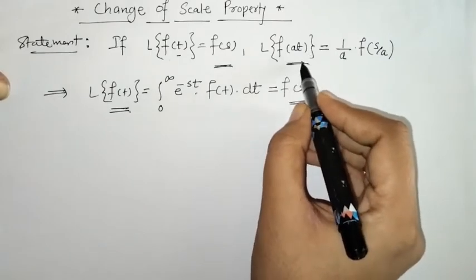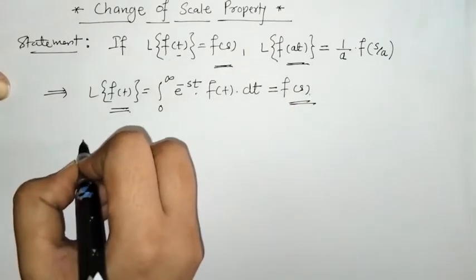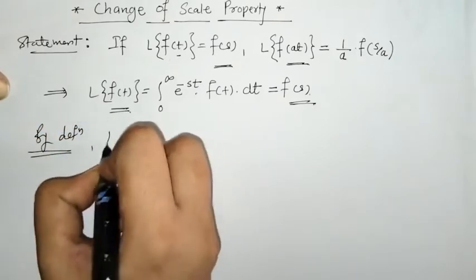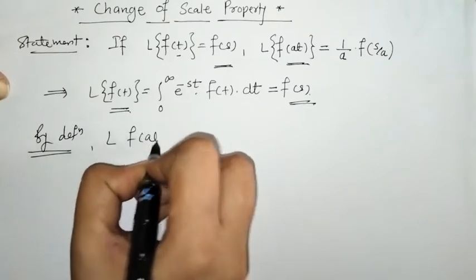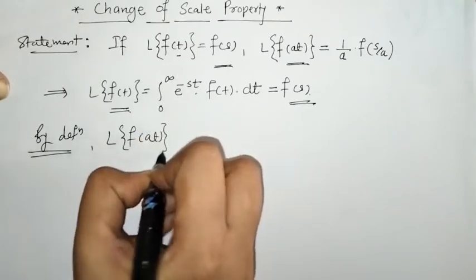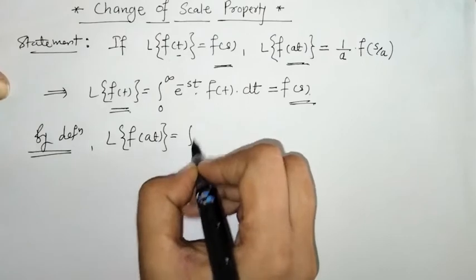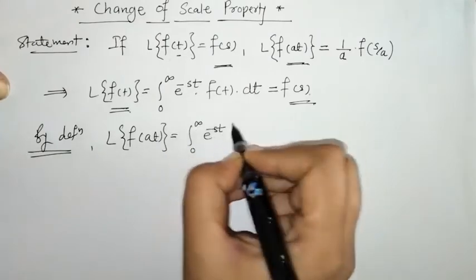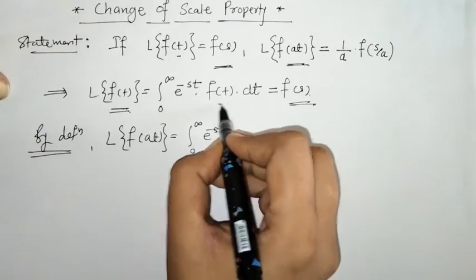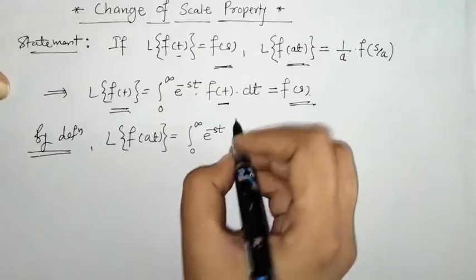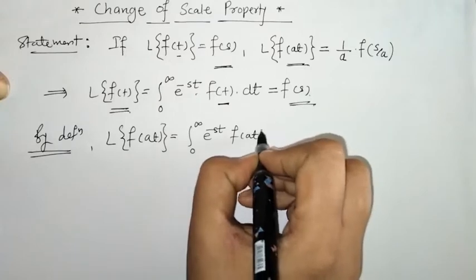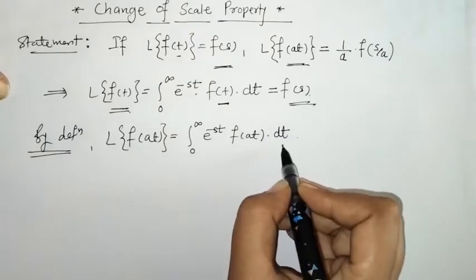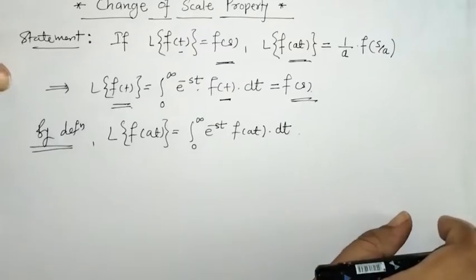By definition, the Laplace of f(at) is given by the integral from 0 to infinity of e^(−st) f(at) dt.